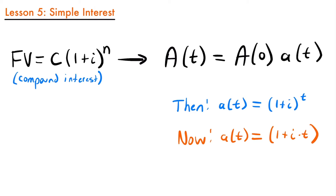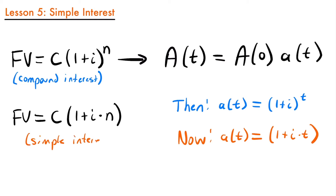So for a simple interest scenario, our equation would look like: future value equals the initial deposit times 1 plus i times n, where n is the number of years. In most cases, when you're given a problem, it will be clarified what type of interest rate applies — it might say it's compounded or it might say the interest rate is a simple interest rate. You just need to know the difference, because their accumulation factors are different.